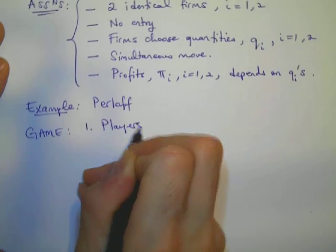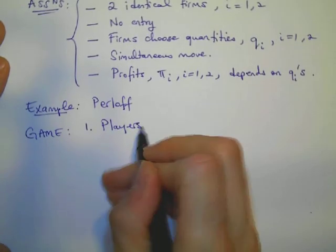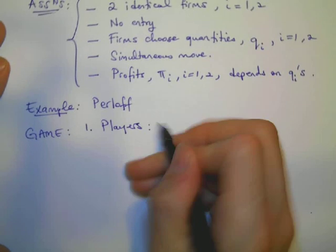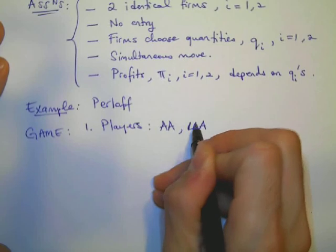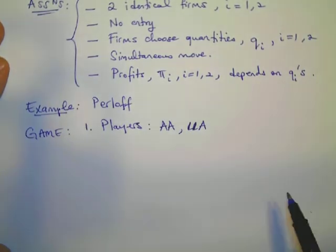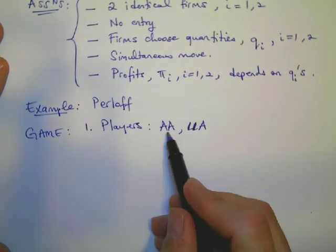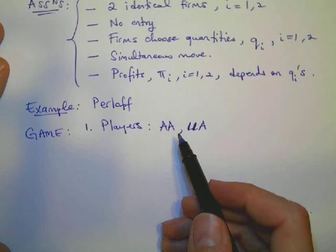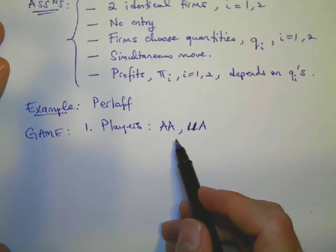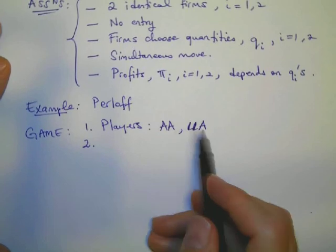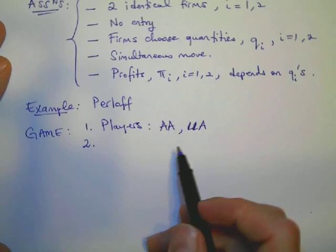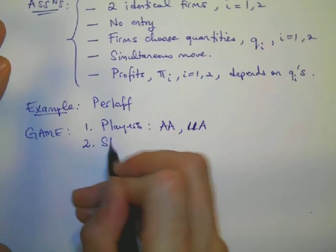So the game that Perloff suggested had these three components. First, we have to identify our two players. So what are the two firms? Perloff had in mind the following scenario, where he has two airline companies, American Airlines and United Airlines, competing for customers on flights between Chicago and Los Angeles. And there is no other players. So it's close to entry. We can only have these two airline companies.